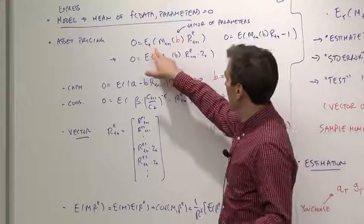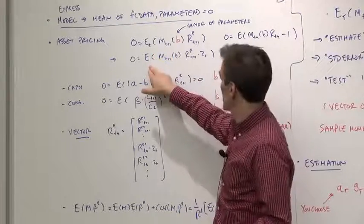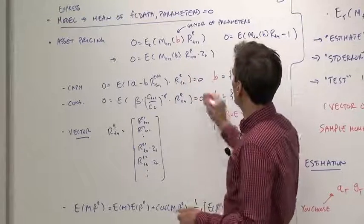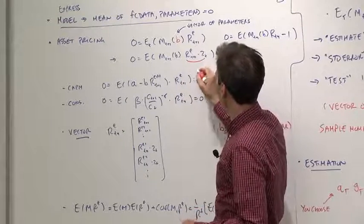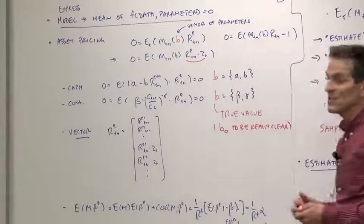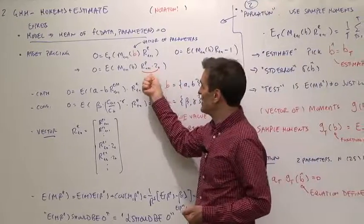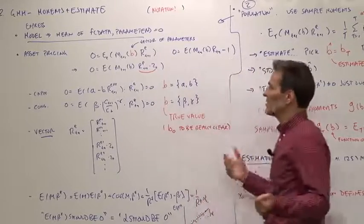We learned how to take unconditional means and to include conditioning information by adding instrument ZT or calling that a managed portfolio RE times ZT. So our model says the mean of some function of data and unknown parameters equals zero.